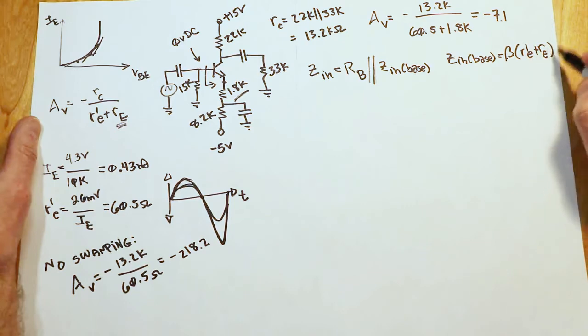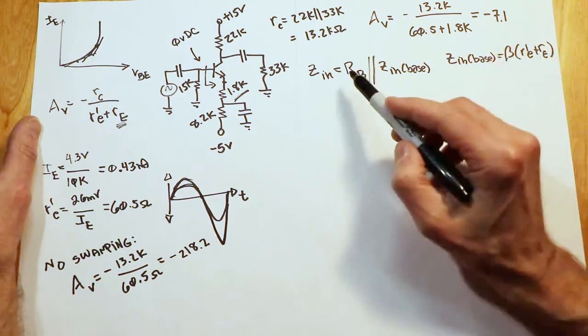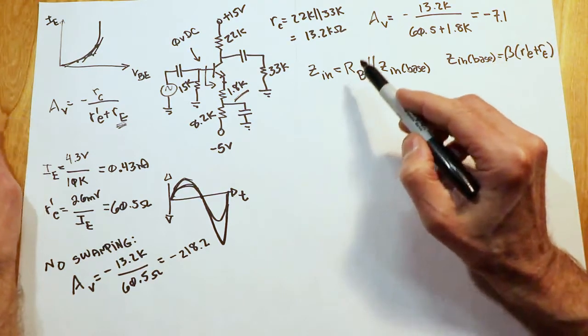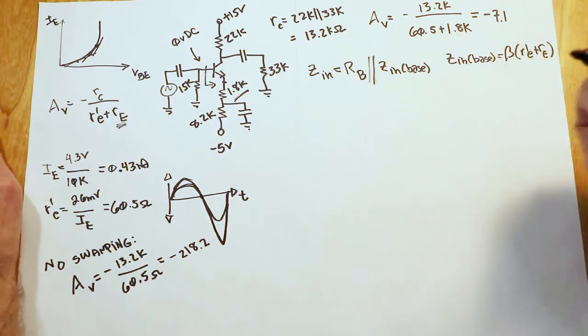As we increase the amount of swamping, in other words, as the R E gets bigger and bigger, this whole quantity gets larger, and our Zn base increases appropriately. Now that is, of course, in parallel with our B, and our B might be the limiting factor here.